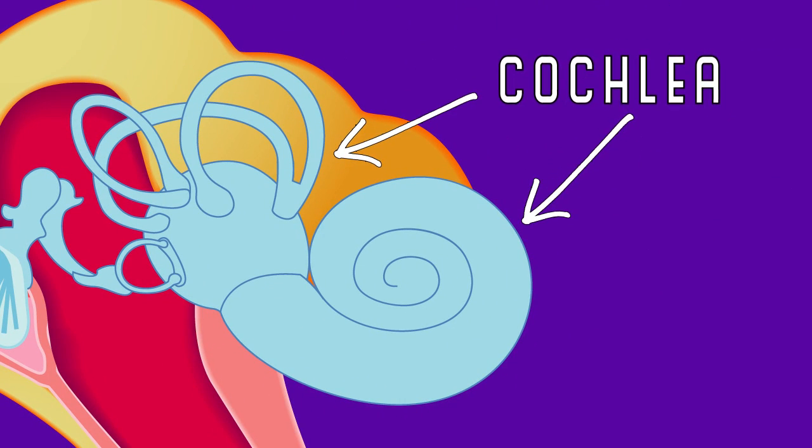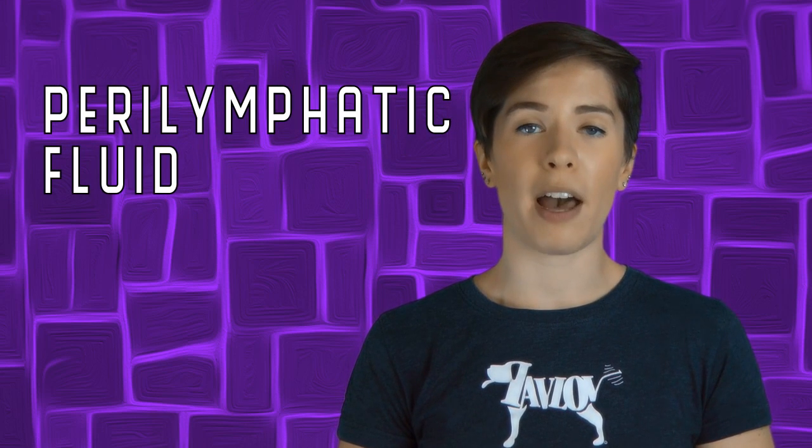The oval window leads to the cochlea. Inside the cochlea is a special fluid called the perilymphatic fluid. When the ossicles hit the oval window, the sound vibrations turn into sound waves again, but this time they are waves in the perilymphatic fluid.